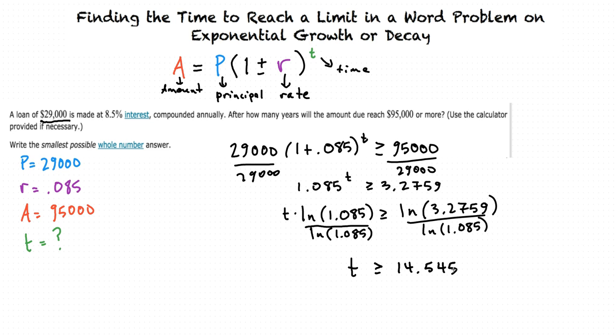After doing that, we get T is greater than or equal to 14.545. We want to find the smallest possible whole number that satisfies this, so we can see that T equals 15 years is the smallest possible whole number answer. This means that it will take about 15 years for the loan's debt to reach $95,000. I sure hope this person will be able to pay everything off before that.